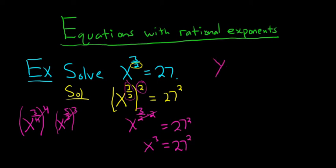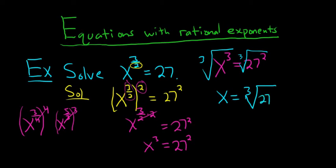Let me write this again up here. So, X cubed equals 27 squared. Now, to get rid of the 3, we can just take the cube root of both sides. And so, these cancel, so we get X equals cube root of 27 squared.